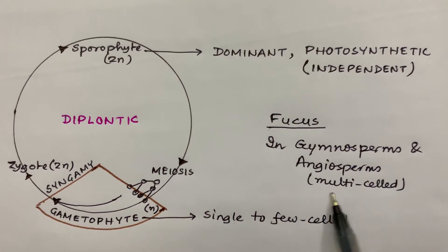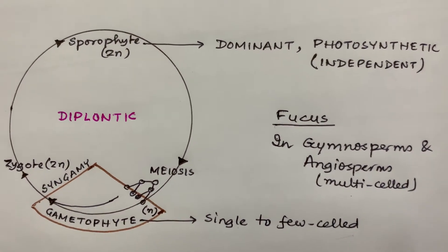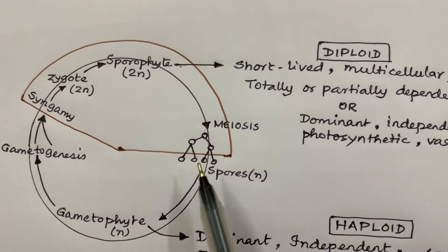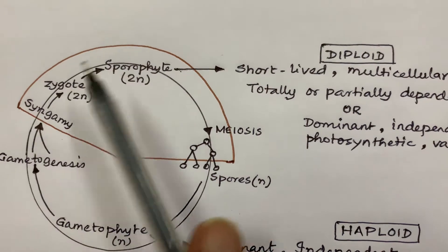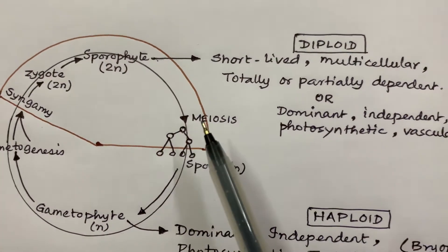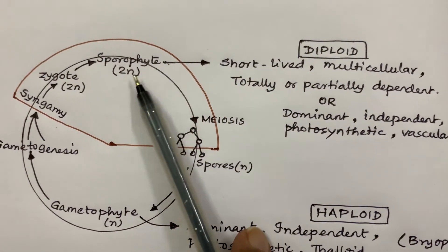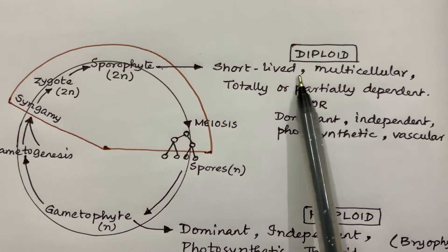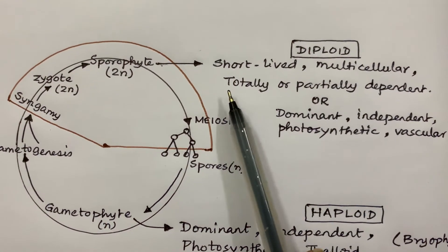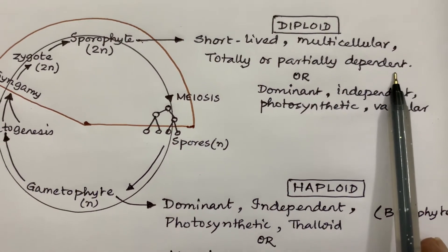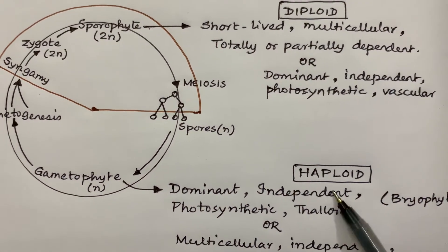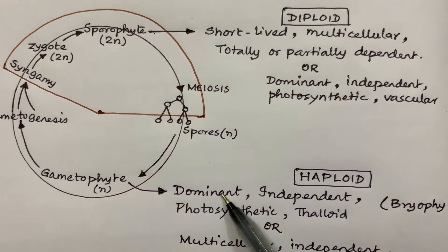Now the third one, haplodiplontic. This is almost half-half. The diploid sporophyte is short-lived, multicellular, totally or partially dependent on the gametophyte, and the gametophyte is dominant, independent—independent means photosynthetic—and thalloid in case of bryophytes.